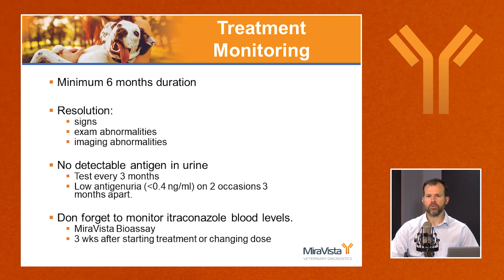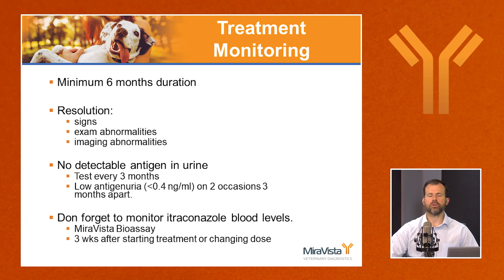For treatment monitoring and deciding when to stop treatment: a minimum of six months of treatment is required, and many cases — especially severe disseminated ones — need longer. We want to treat past the resolution of clinical signs, exam abnormalities, and imaging abnormalities. For example, a baseline chest radiograph that is abnormal should be rechecked at three-month intervals, with lesion resolution expected before stopping. A small amount of residual pulmonary scarring as a focal unstructured interstitial pattern is possible, but otherwise we expect dramatic improvement.